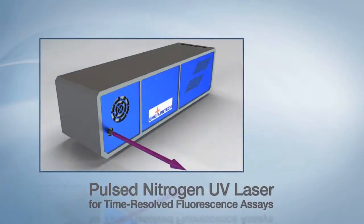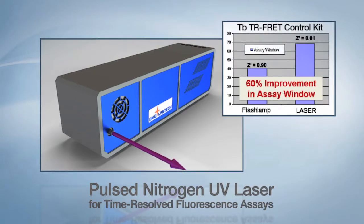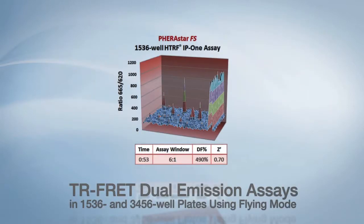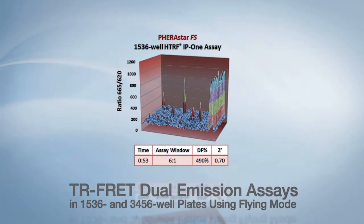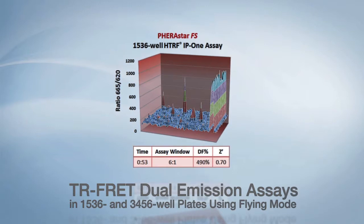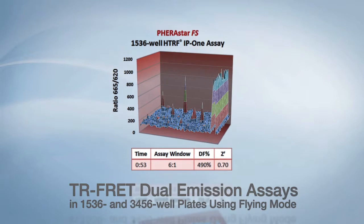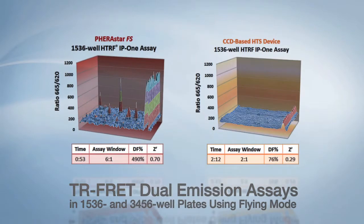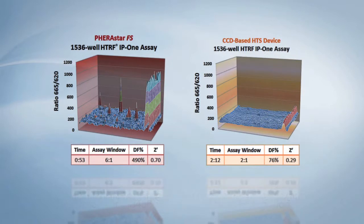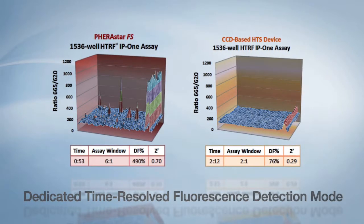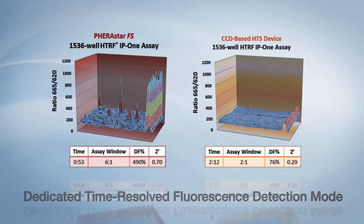For time-resolved fluorescent assays, the Ferristar FS can be equipped with a UV laser. The specific high-energy excitation laser allows many labs to decrease their reagent concentrations several fold. Because of the laser stability and rapid flash rate, the Ferristar FS is the only instrument capable of measuring time-resolved FRET assays in flying mode in three, four, five, six well plates, outperforming even CCD-based instruments. With a Ferristar FS, some labs will increase their throughput by a factor of 10 while still saving on reagent costs.